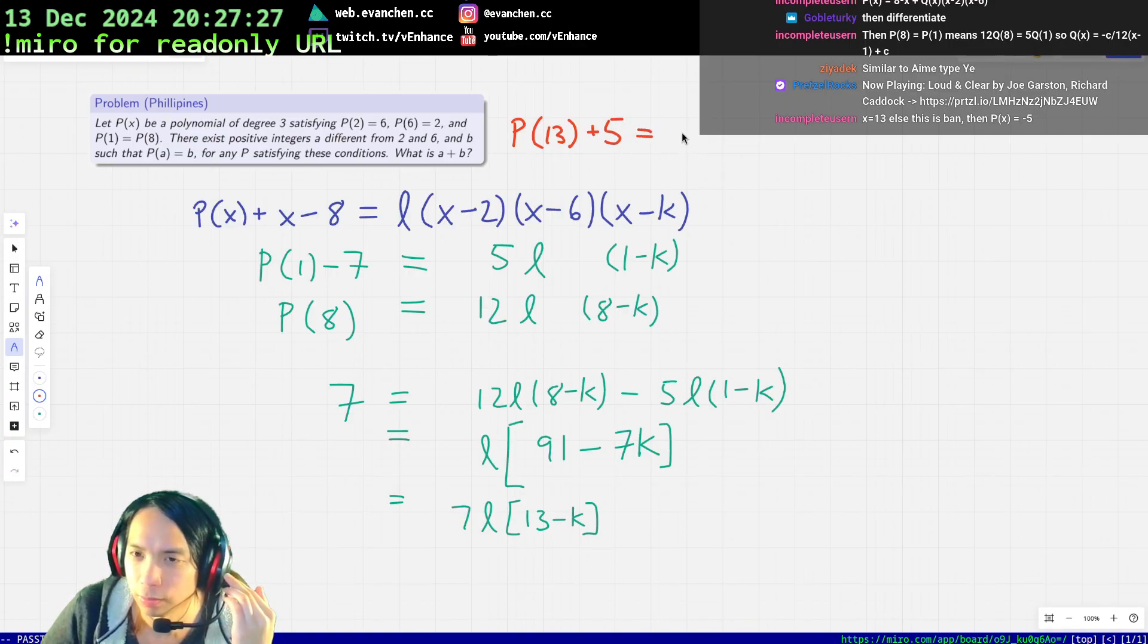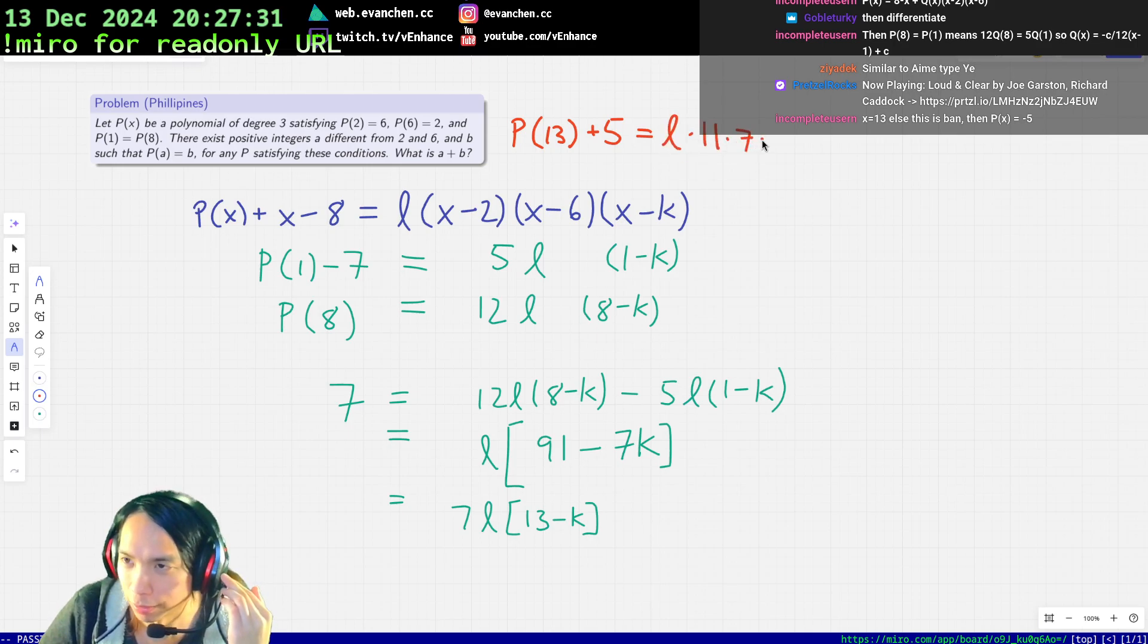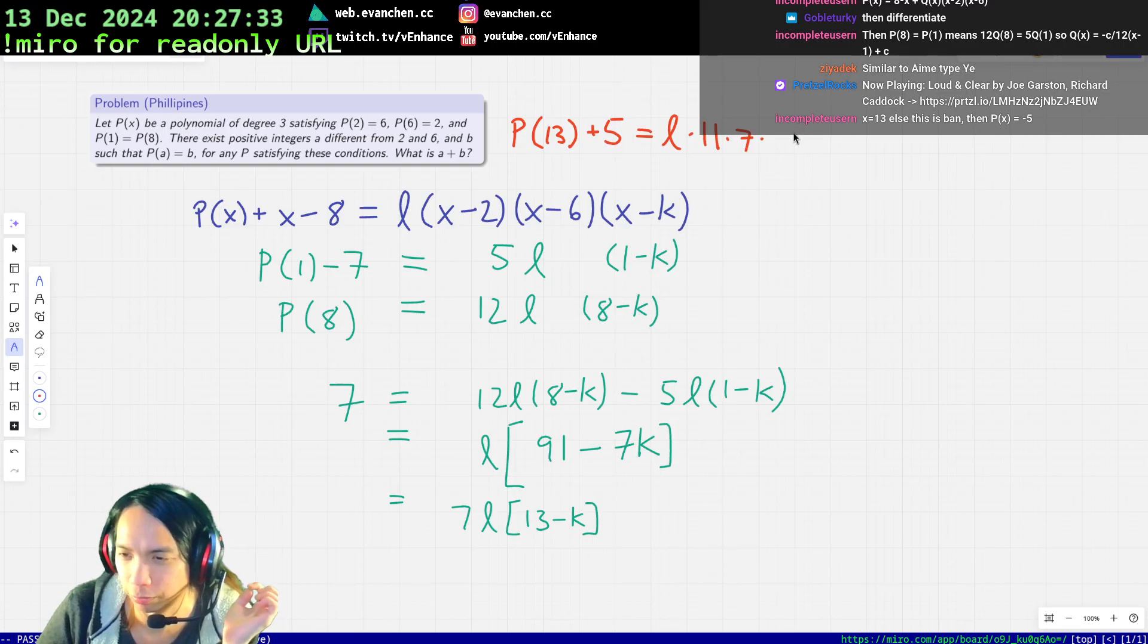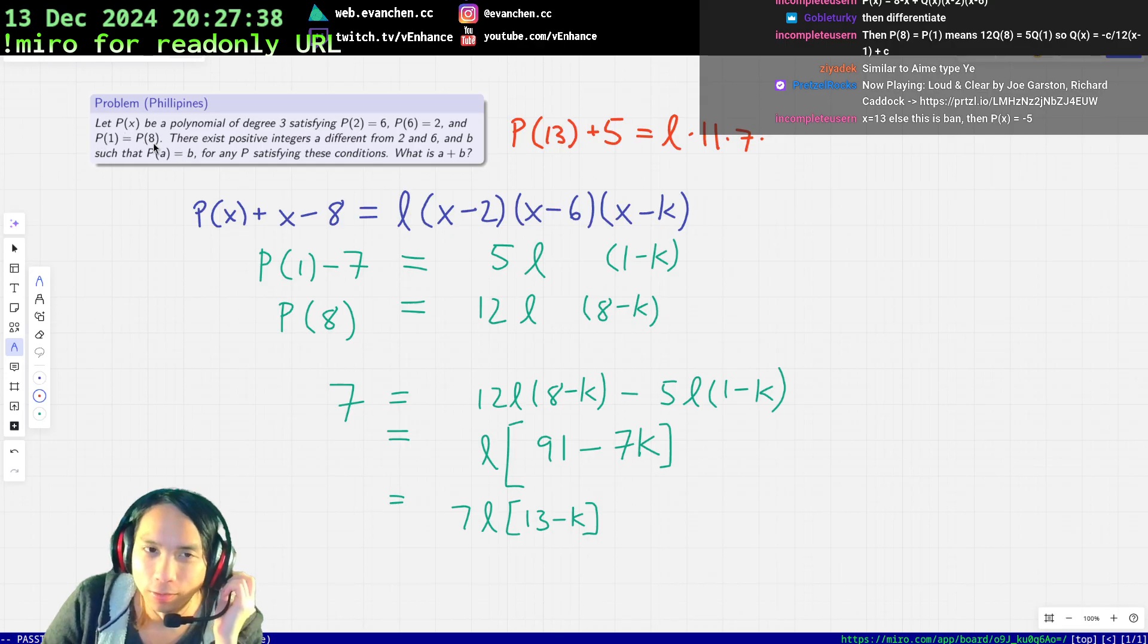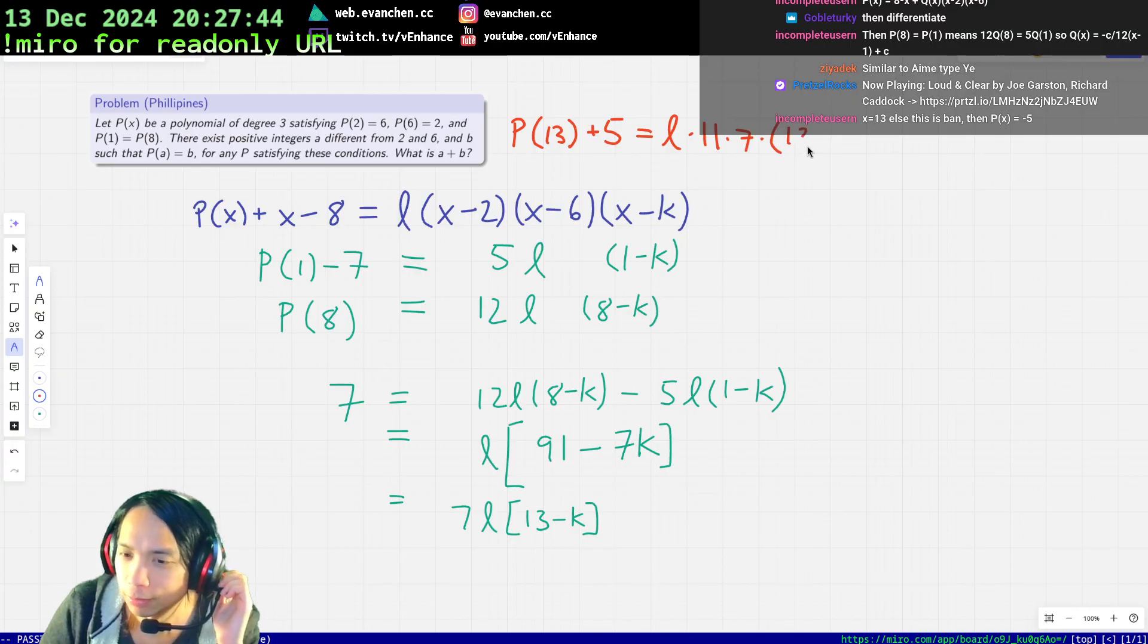It's like l times 11 times 7. Okay, so actually this makes it clear that there's no trick with the numbers in the sense that you can write this problem for any anything instead of 1, 8, 2, 6 or whatever and there should usually still be okay.